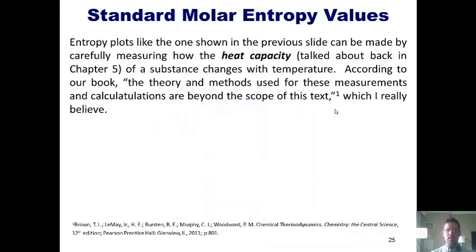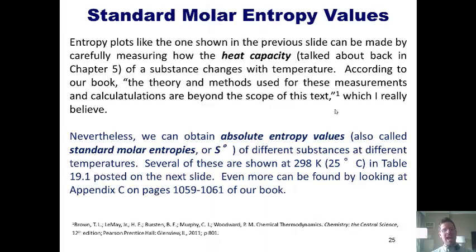Entropy plots like the one that I just showed can be made by carefully measuring how the heat capacity, which we talked about back in chapter 5, of a substance changes with temperature. According to our book, quote, the theory and methods used for these measurements and calculations are beyond the scope of this text, end quote. Which frankly, I really believe. Nevertheless, we can obtain absolute entropy values, also called standard molar enthalpies, or S°, of different substances at different temperatures. Several of these are shown at 298 Kelvin, or 25 degrees Celsius, which is roughly room temperature. In table 19.1, that I've posted on the next slide. Even more can be found by looking at Appendix C at the back of your book.